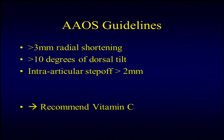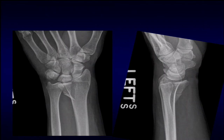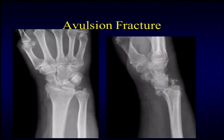Interestingly, one of the only other AAOS guidelines is a recommendation for vitamin C to try to prevent CRPS. When we talk about different fracture types, beyond the Colles fracture and axial loading fractures, one to remember is the volar lunate facet fracture. This is important because not only does it need to be fixed, it also causes subluxation of the entire joint since the volar carpal ligaments are attached there—so the whole proximal row goes with that fracture. Using a fragment-specific plate to fix that facet rather than a standard plate is important to keep in mind.